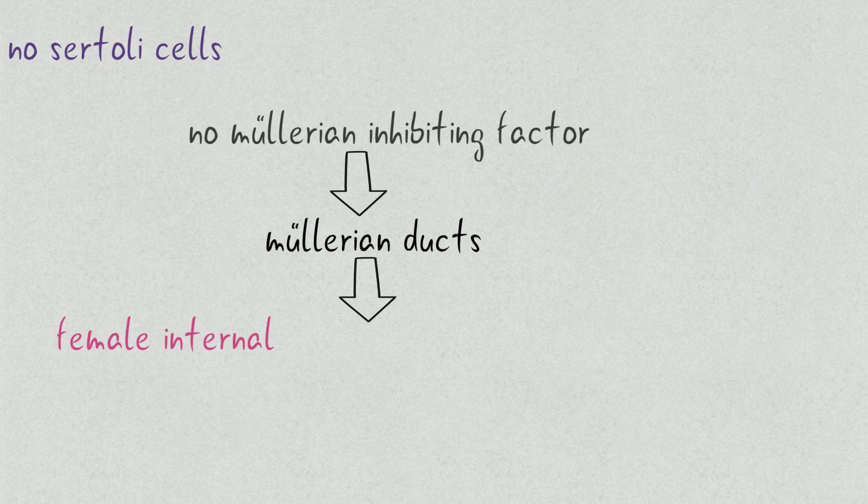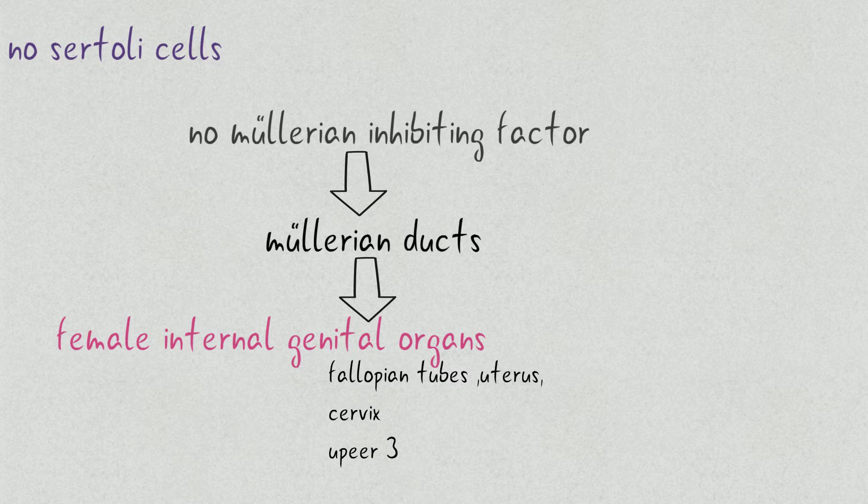This is responsible for the formation of internal genital organs like fallopian tubes, uterus, cervix and upper three-fourth of vagina.